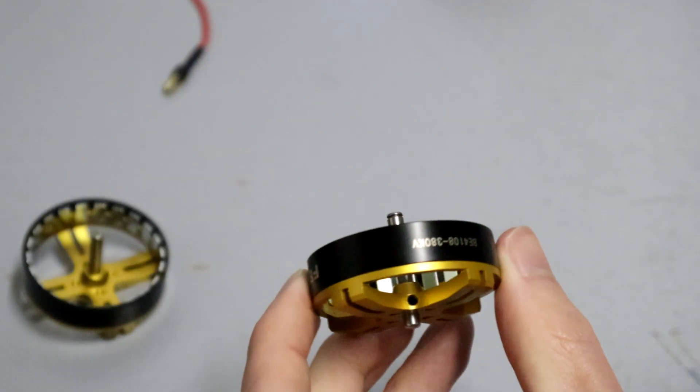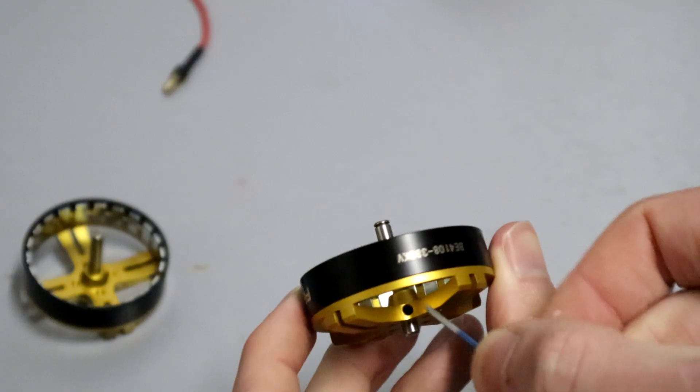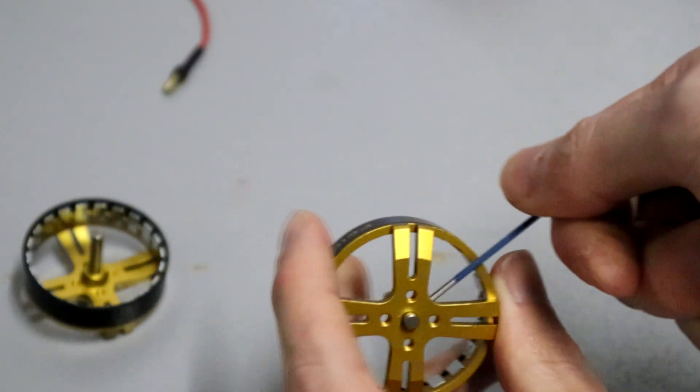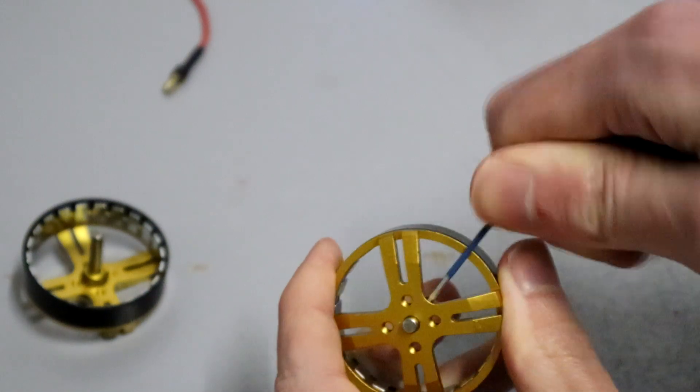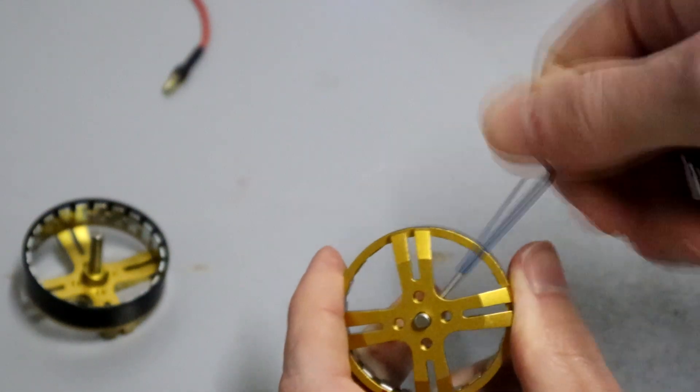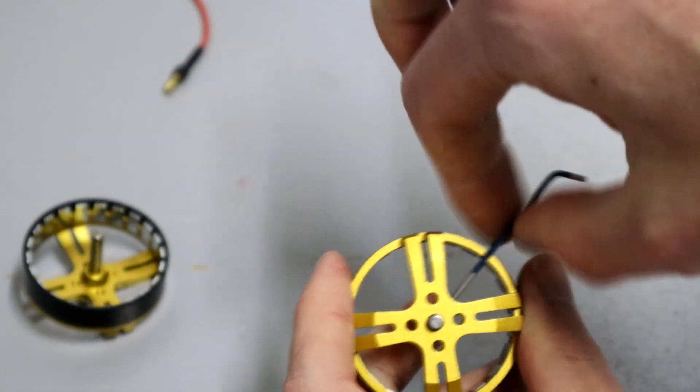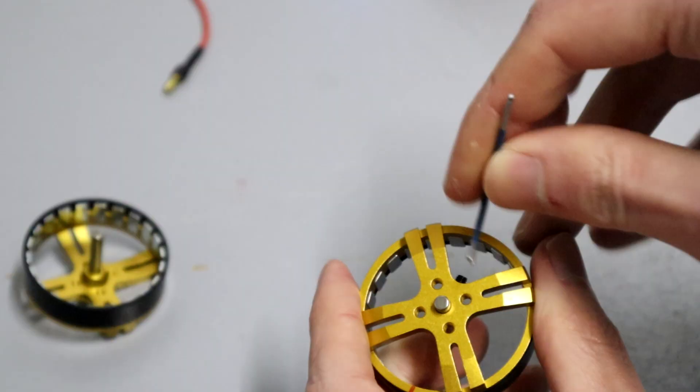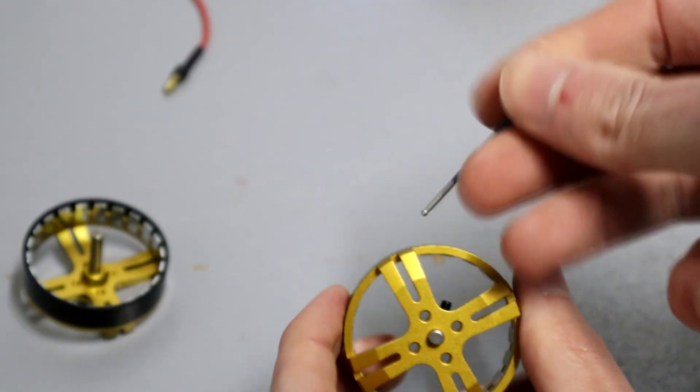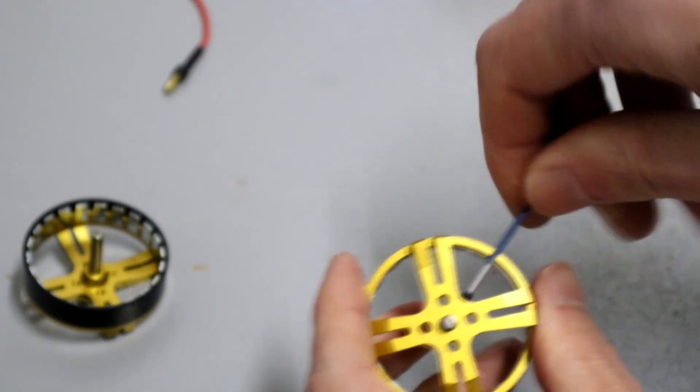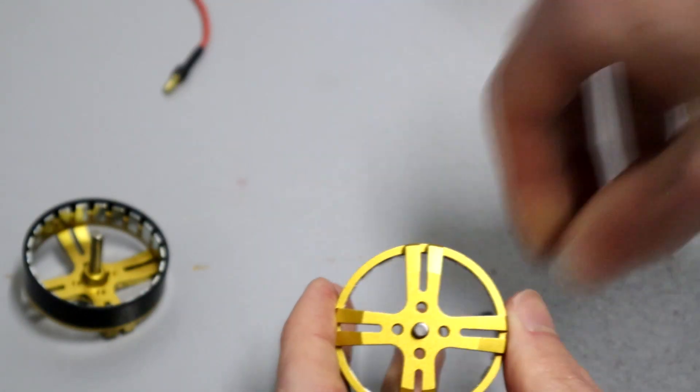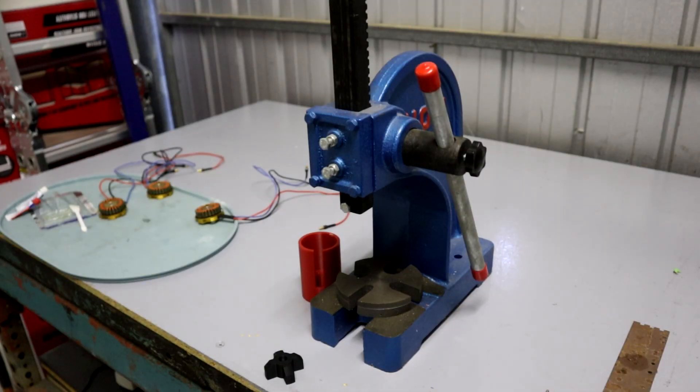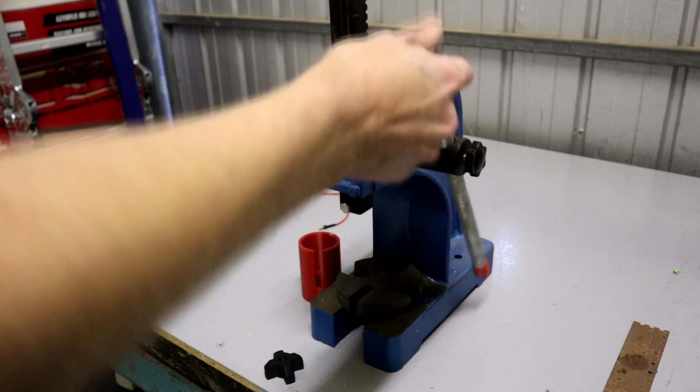Before we do anything else, we've got to get this grub screw out, because otherwise the shaft here isn't going to push through. Now these might be loctited, they might not be. Let's see what we can do. Oh okay, well that went really easily. I didn't even have to put the allen key in the high torque setting, which is just putting it in this way around. You got more leverage on it that way, but I didn't even have to do that. Okay, so no wonder the shaft on that other one slipped. It's really not being held in there with much force at all.